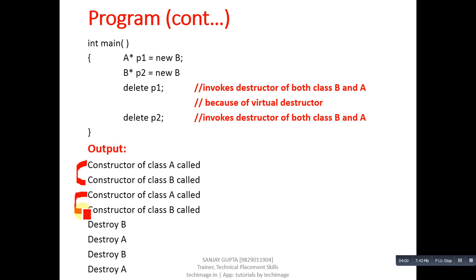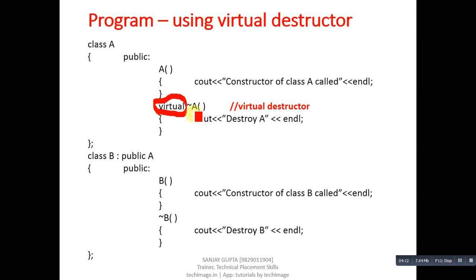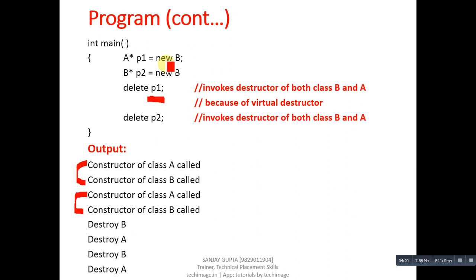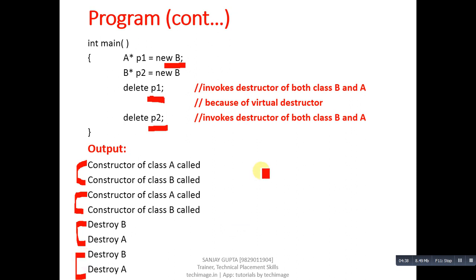When delete p1 is called, the compiler would normally call the base class destructor since p1 is of base class type. But because the destructor is declared as virtual, the virtual mechanism checks the actual address stored in p1. Since p1 holds the address of a derived class object, the derived class destructor is executed first, then the base class destructor. For delete p2, since p2 is of derived type, it also calls the derived destructor first, then the base class destructor.